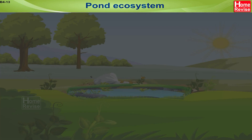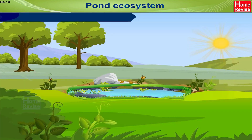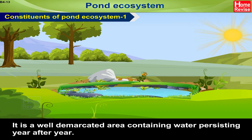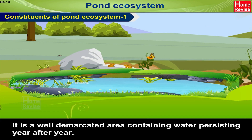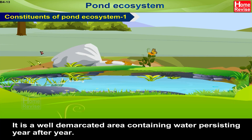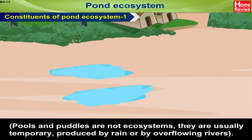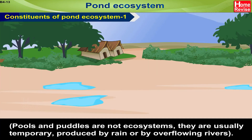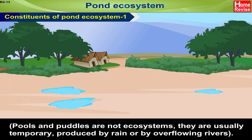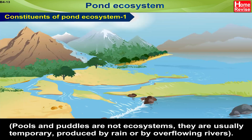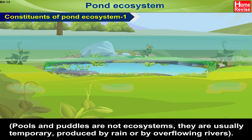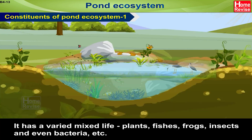Pond Ecosystem — Constituents of Pond Ecosystem: A pond is a well-demarcated area containing water persisting year after year. Pools and puddles are not ecosystems; they are usually temporary, produced by rain or by overflowing rivers.